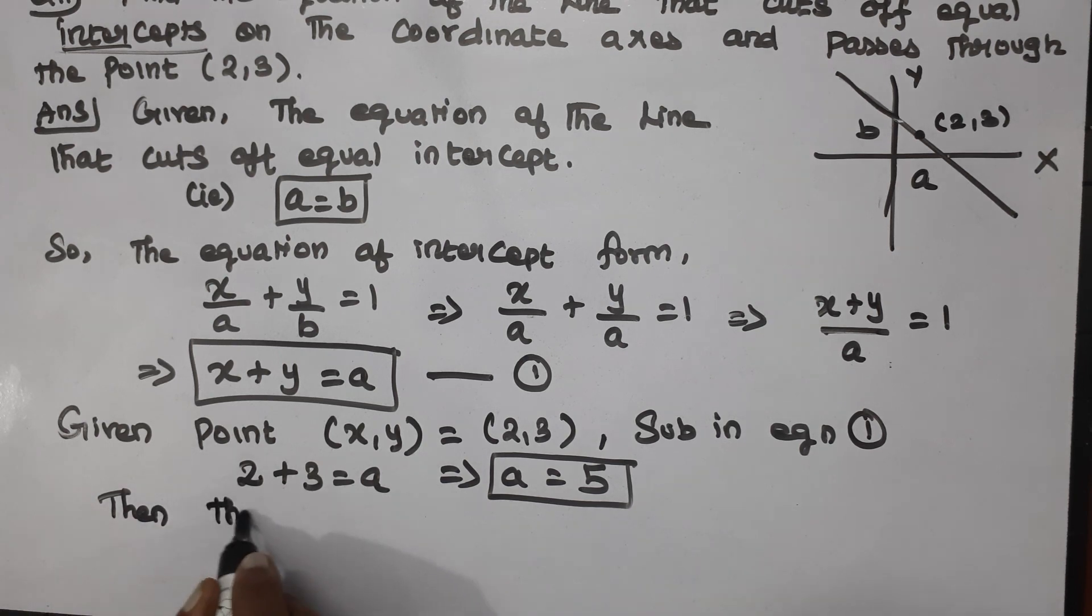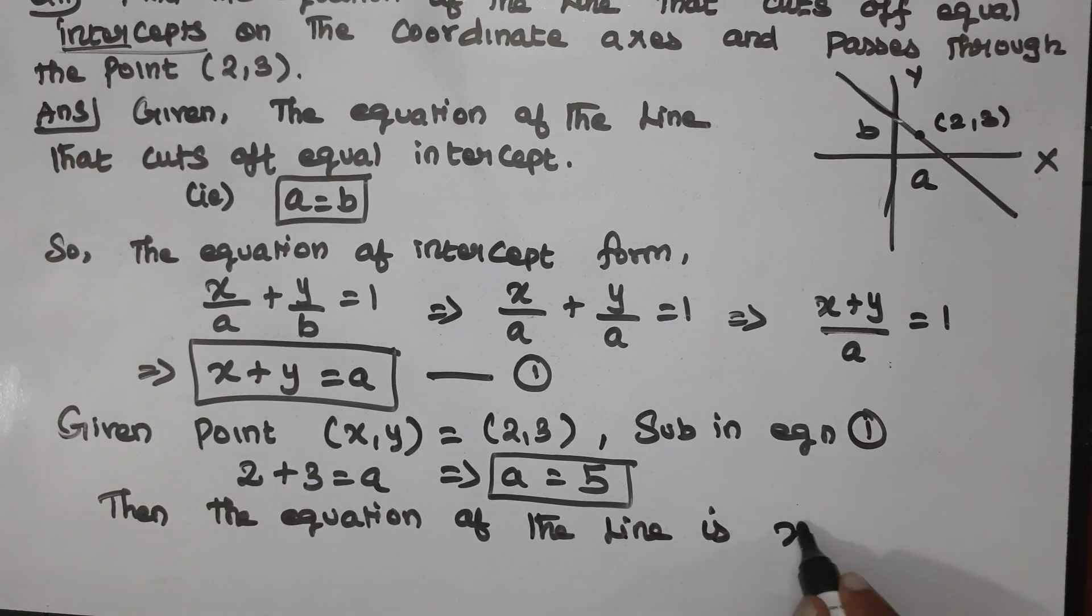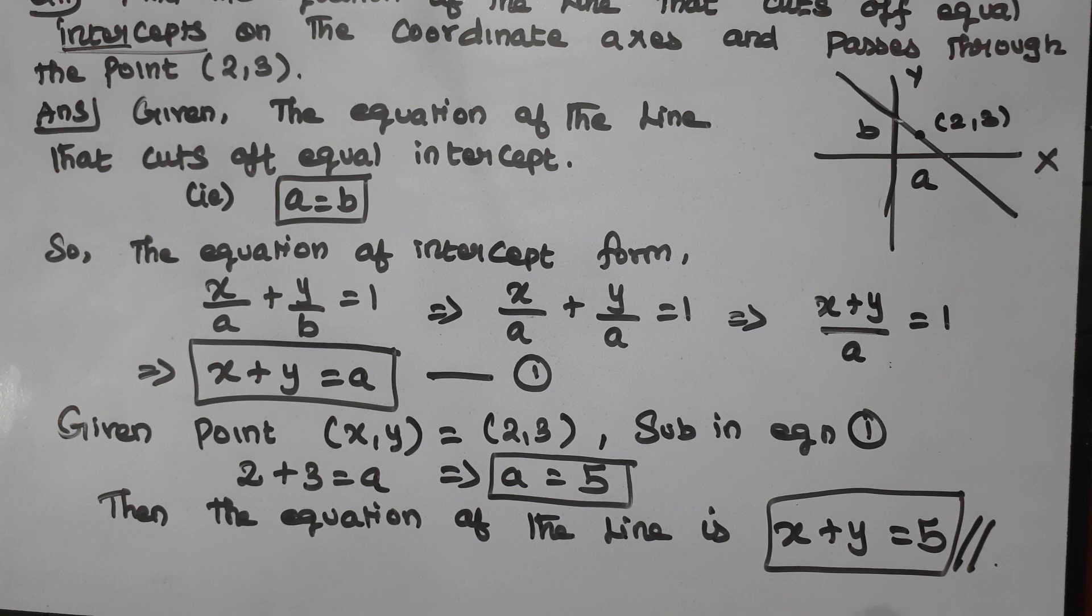Then the equation of the line is x plus y equal to a, which is x plus y equal to 5. Hence the answer. The equation of the line is x+y=5. Then you will complete writing, students.